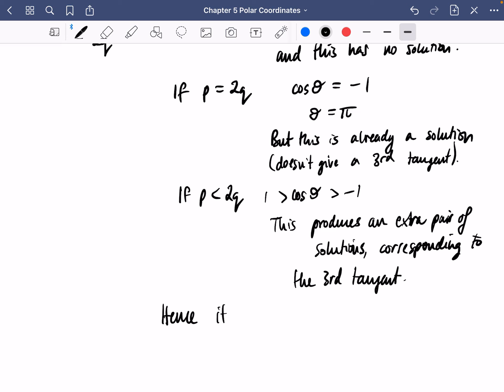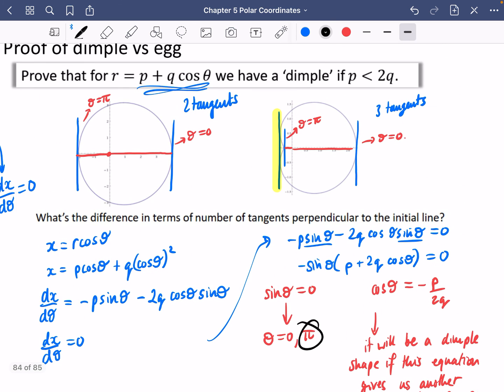Hence, it has a dimple if p is less than 2q, which is what it asked for here.